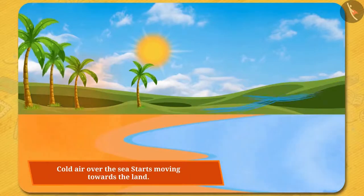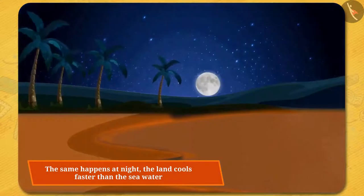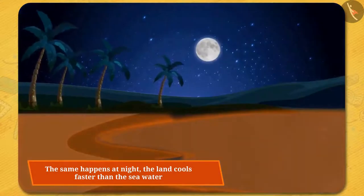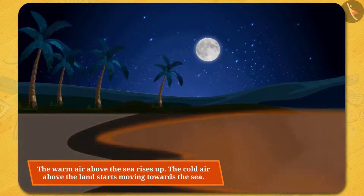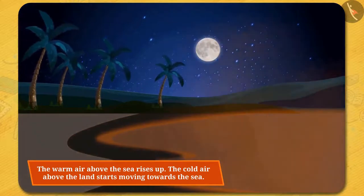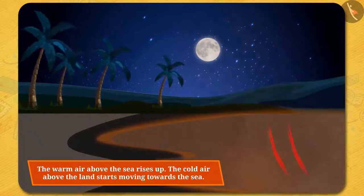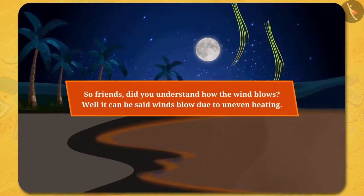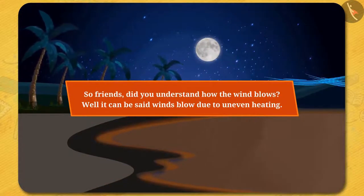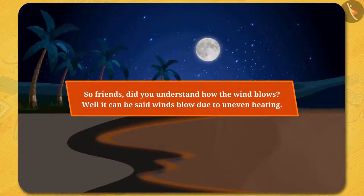The same happens at night — the land cools faster than the sea water, and the warm air above the sea rises up. The cold air above the land starts moving towards the sea. So friends, did you understand how the wind flows? It can be said wind blows due to uneven heating.